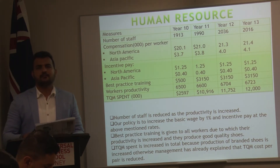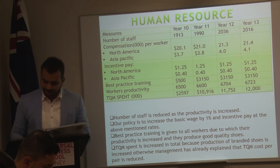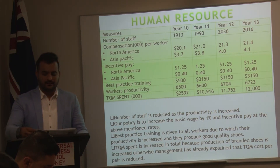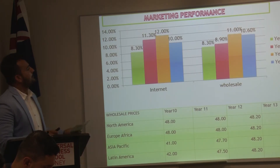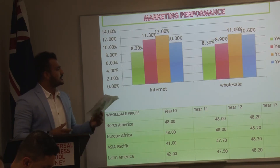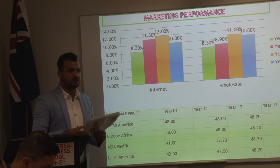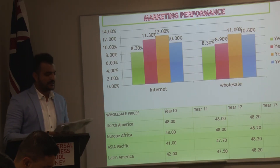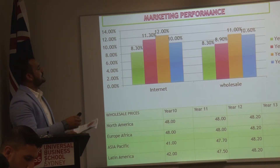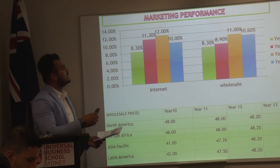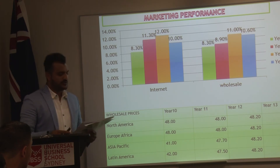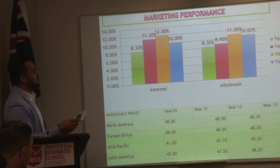My name is Javir Singh and I'm the marketing manager of Leather Shoes Company. We are selling nine-star shoes in the market. As you can see in the bar chart, we had 8.30% market share in year 10, which slightly increased in years 11 and 12 because of good market feedback and production. There is a slight decrease in year 13 because we experienced a shortfall in production, which slightly decreased both internet and wholesale market share.